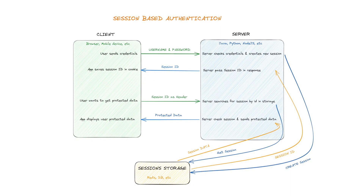Now let's compare two primary methods of authentication in the web: session-based and token-based. We'll start with session-based auth. Let's say we have a client — which could be a browser or mobile device — and a server written in any modern programming language. As part of the server infrastructure, we have a session storage, which we'll discuss shortly.